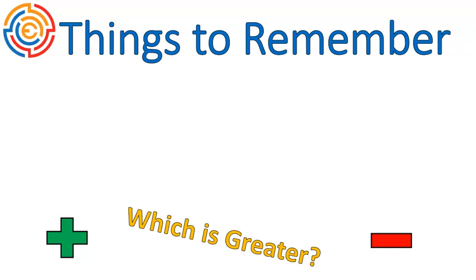A couple of things to remember: when adding integers, ask which has the greater absolute value. If there are more positives than negatives, your final answer is positive. If there are more negatives than positives, your answer is negative. Adding two positives gives an even bigger positive, and adding two negatives gives a larger negative number. I hope that lesson was helpful — have a wonderful day!